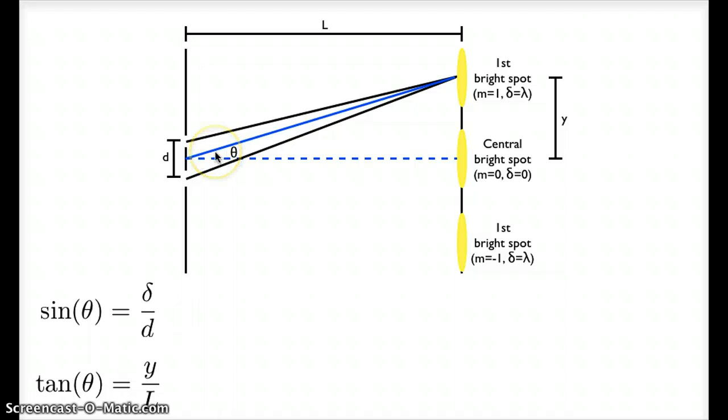So from this new triangle in blue, I can say that tangent theta equals opposite this distance on the screen, which I'll call y, between the center of the screen and the center of whatever point I'm interested in. Here it's the first bright spot. Tangent theta equals y divided by this length l, the distance from the slits to the screens.